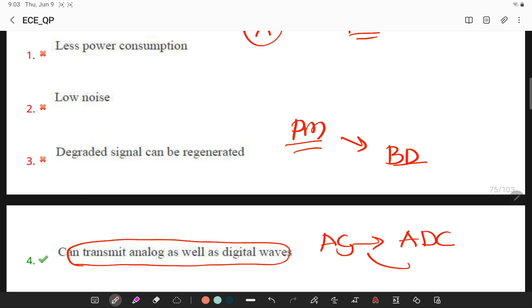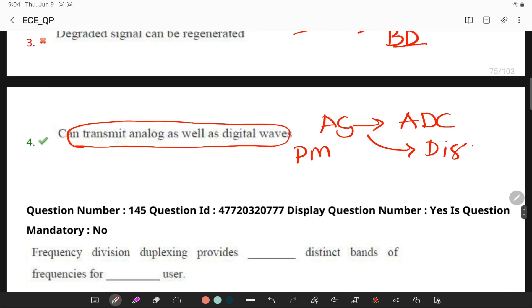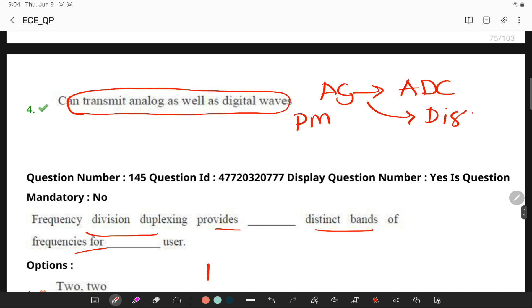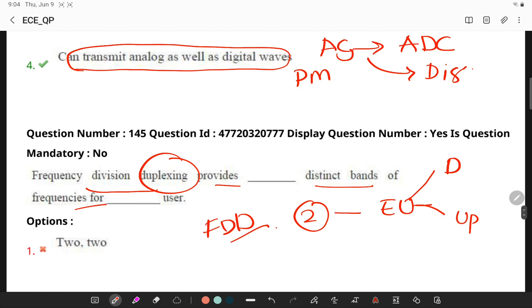However, analog signal has to be converted using an ADC into a digital signal and then you can transmit through pulse modulation. So frequency division multiplexing provides which distinct bands? Actually, FDM, frequency division duplexing, it provides two distinct bands of frequencies for every user, one for downlink and another for uplink. A large interval between these two frequency bands must be allowed so that interference is minimized.